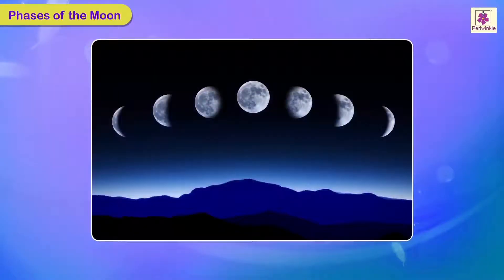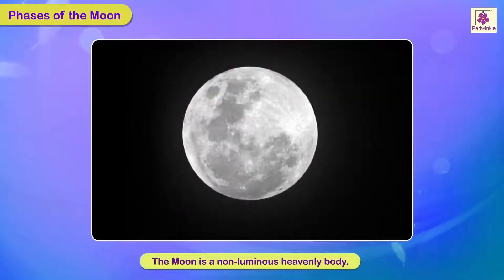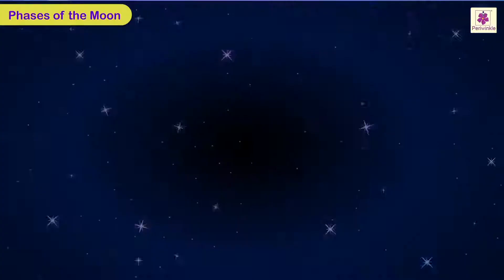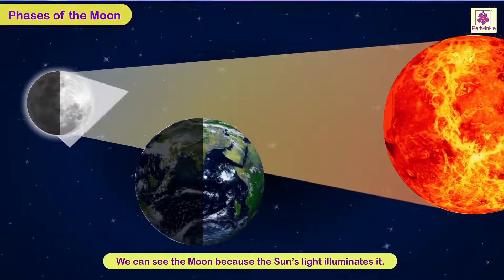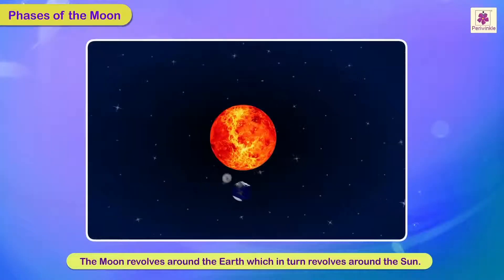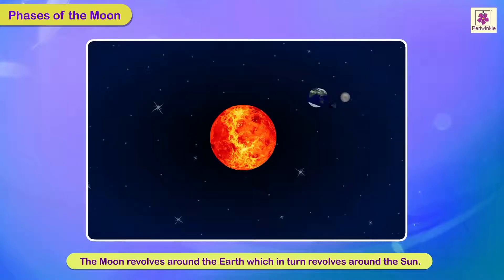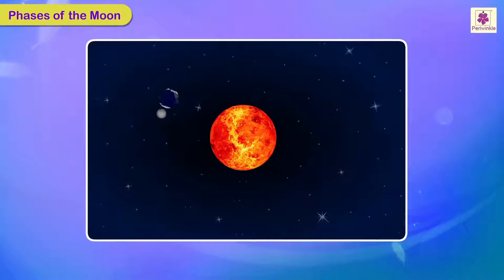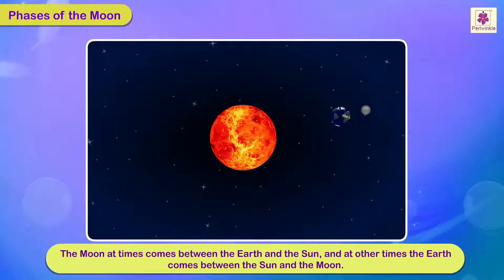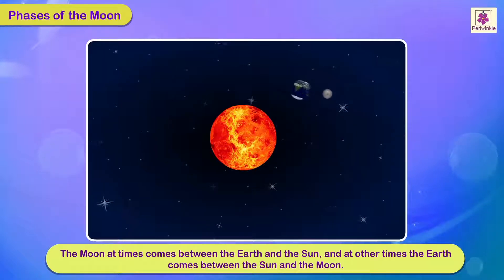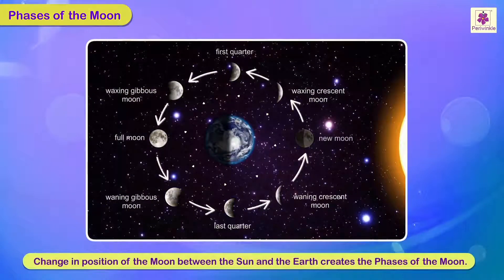Phases of the Moon. The Moon is a non-luminous heavenly body. We can see the Moon because the Sun's light illuminates it. The Moon revolves round the Earth, which in turn revolves round the Sun. As a result, the Moon at times comes between the Earth and the Sun, while at other times the Earth comes between the Sun and the Moon. This change in position creates the phases of the Moon.